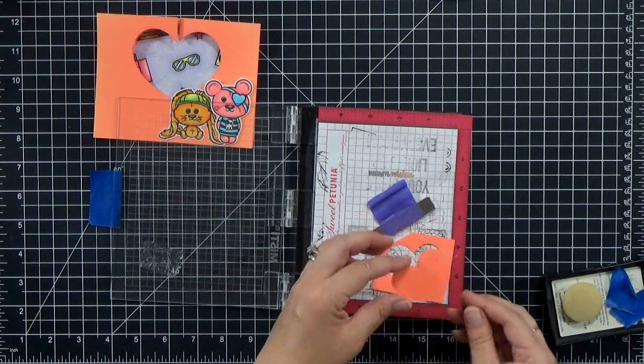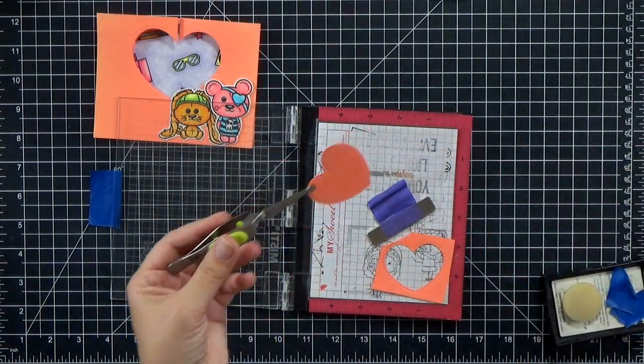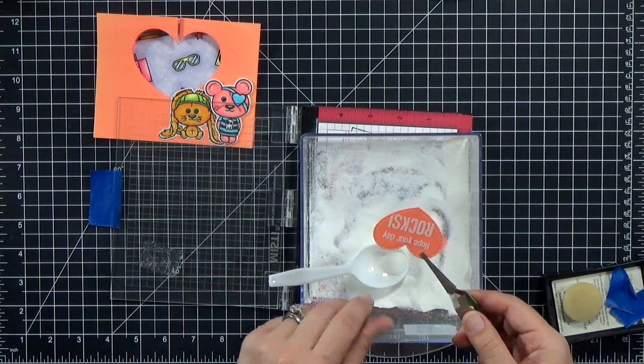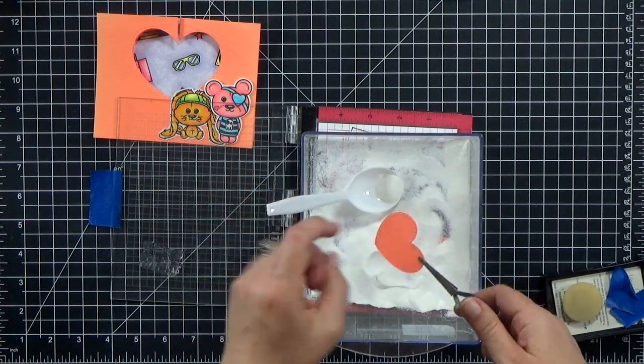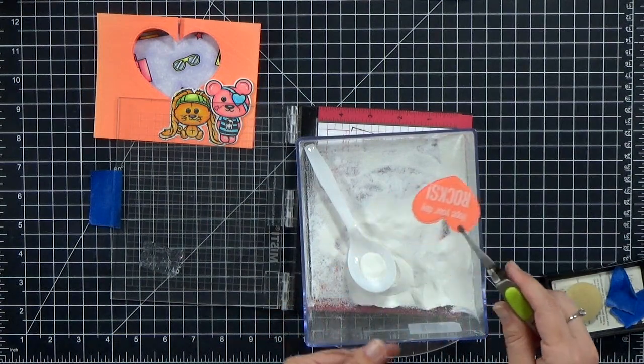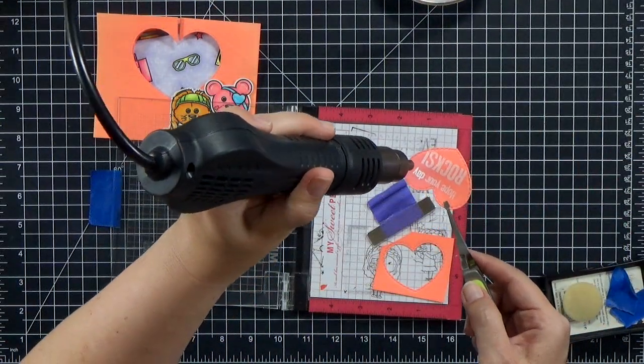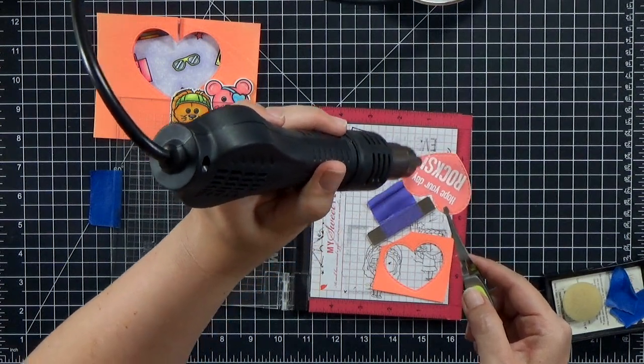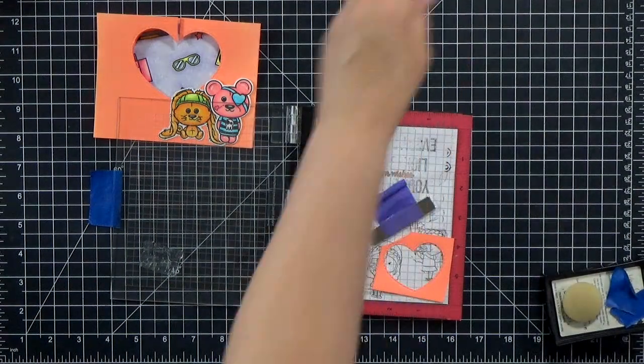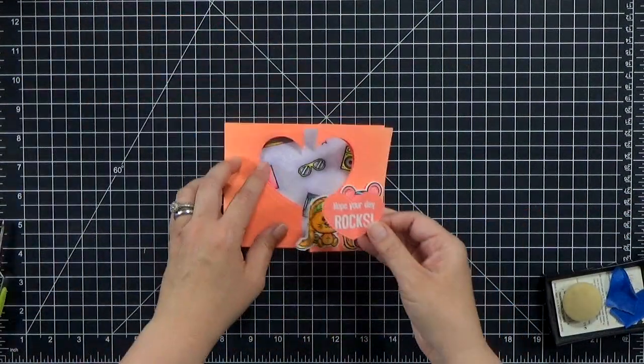And I used my powder tool and I stamped with Versamark ink. That's a clear sticky ink that will hold my embossing powder. I'm going to sprinkle on white embossing powder here. The powder tool makes sure that none of the extra powder sticks where you don't want it to. And then once I've got a good covering there I can bring in my heat gun and melt that powder. This goes fast especially on thinner paper.